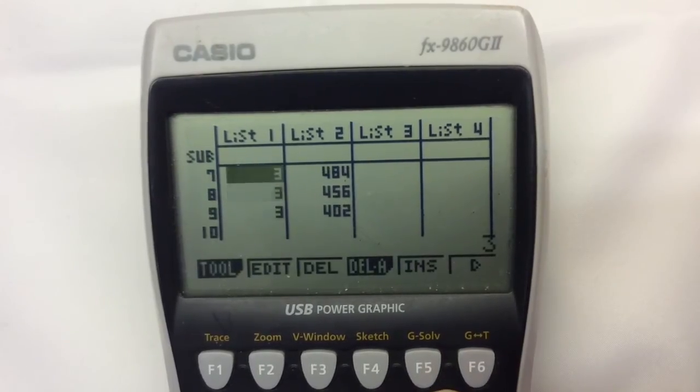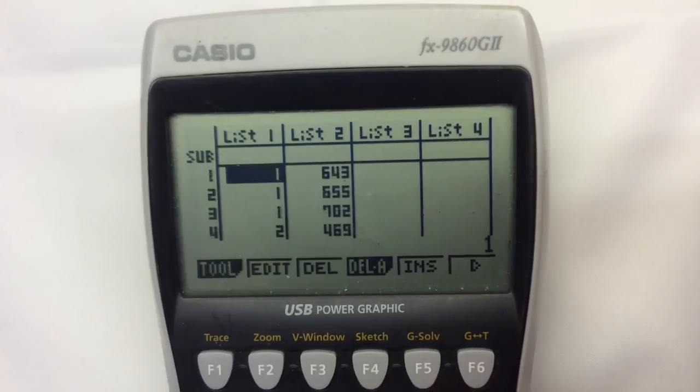Now of course you can enter all of these things in the first column in one go - 1, 1, 1, 2, 2, 2, 3, 3, 3 - but I prefer to do them one group at a time.